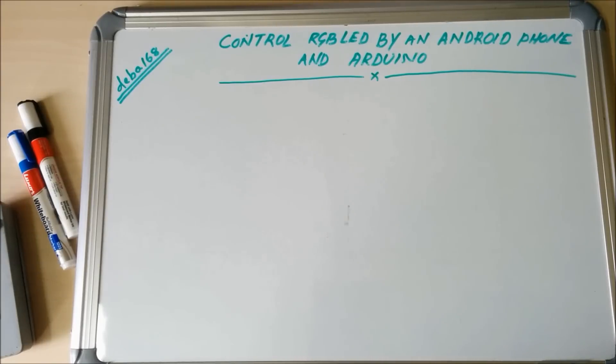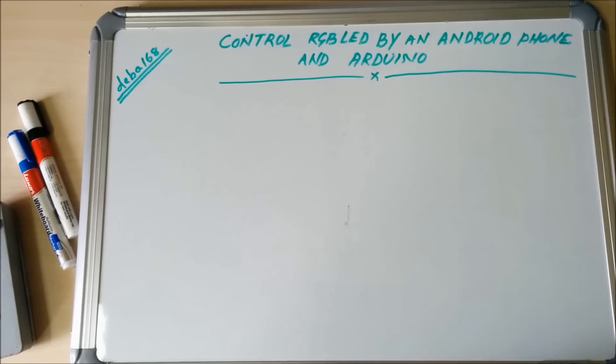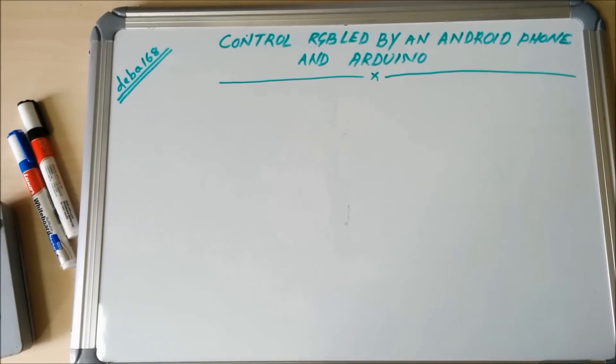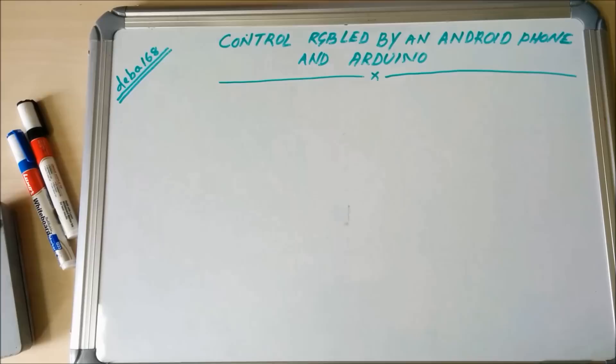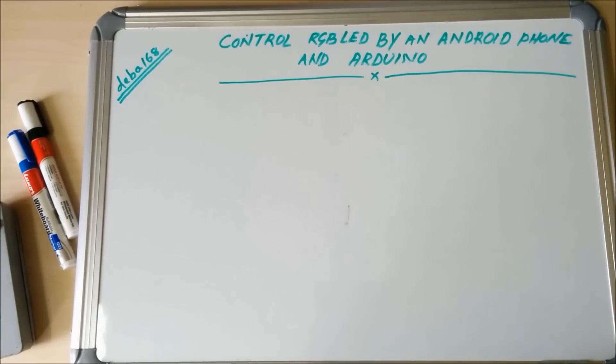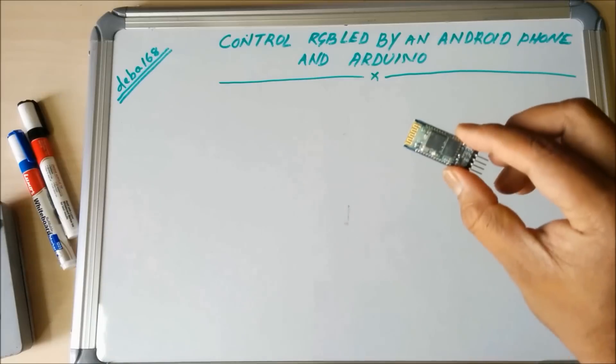Good morning friend, today I am going to show you how you can control an RGB LED by using your Android device like a smartphone or tablet and Arduino. For this project we need Arduino Uno, a Bluetooth module and your smartphone.